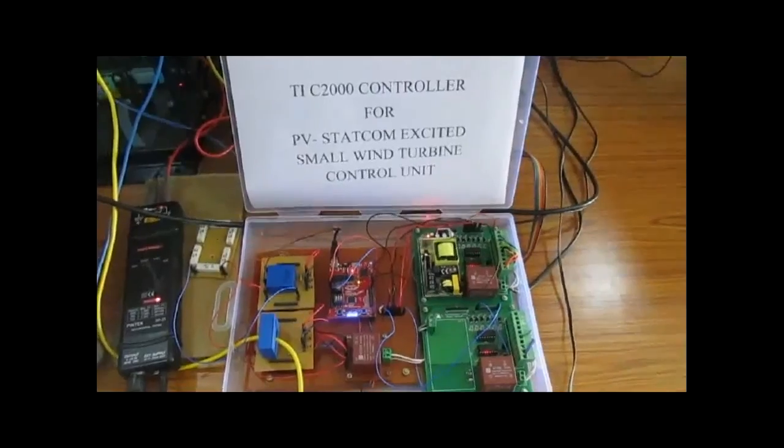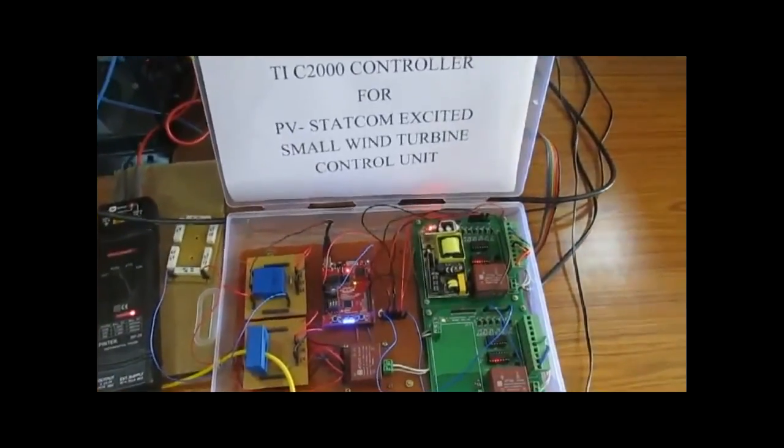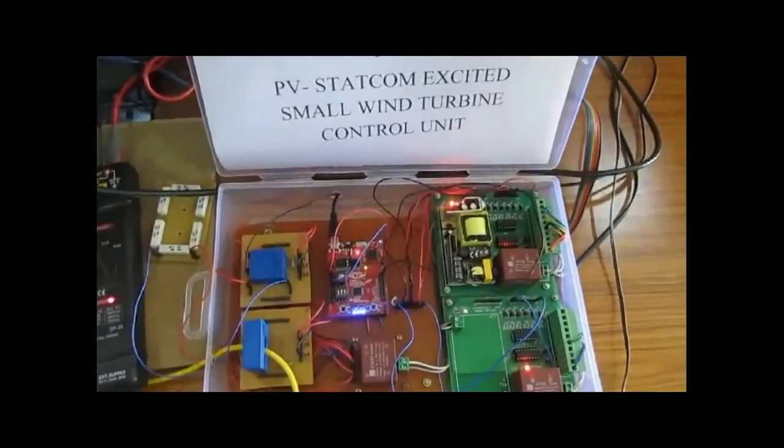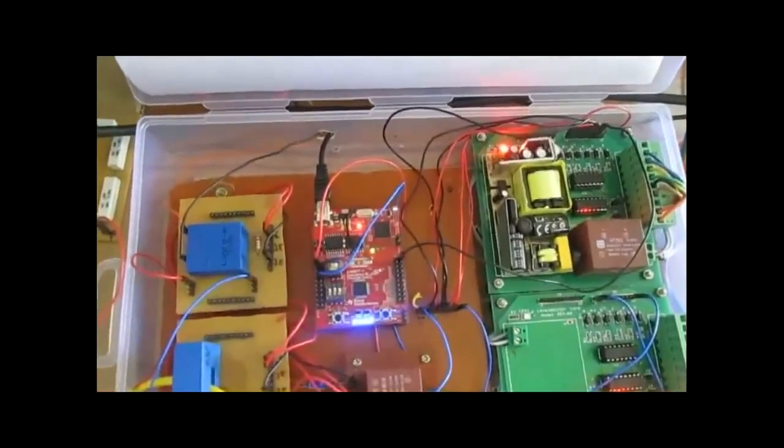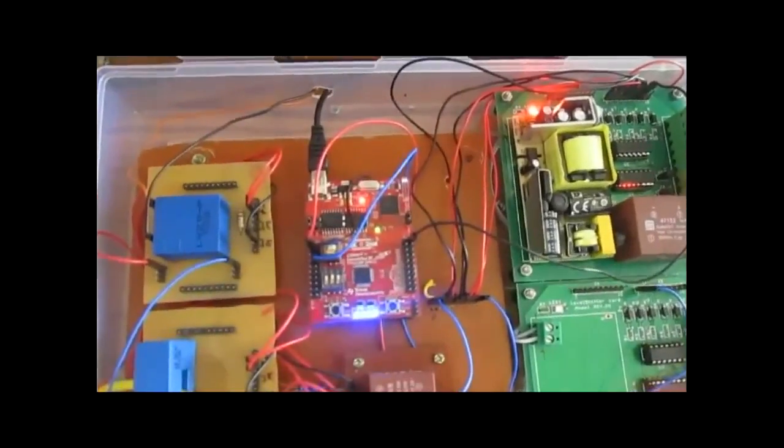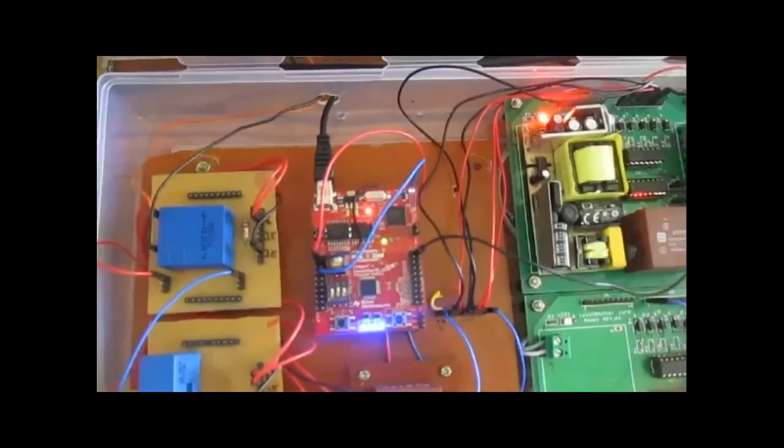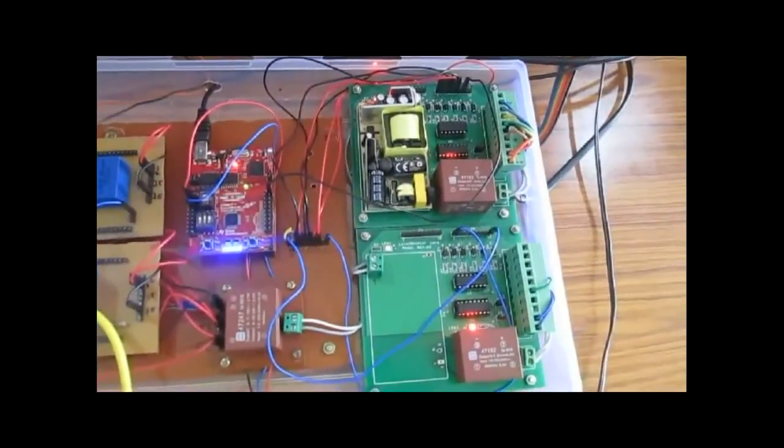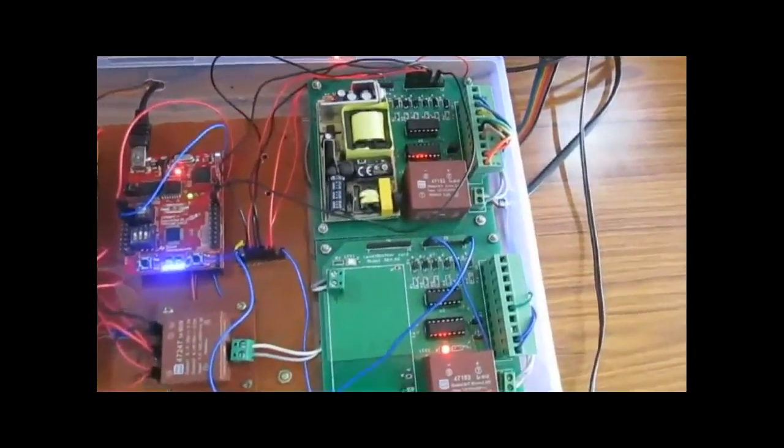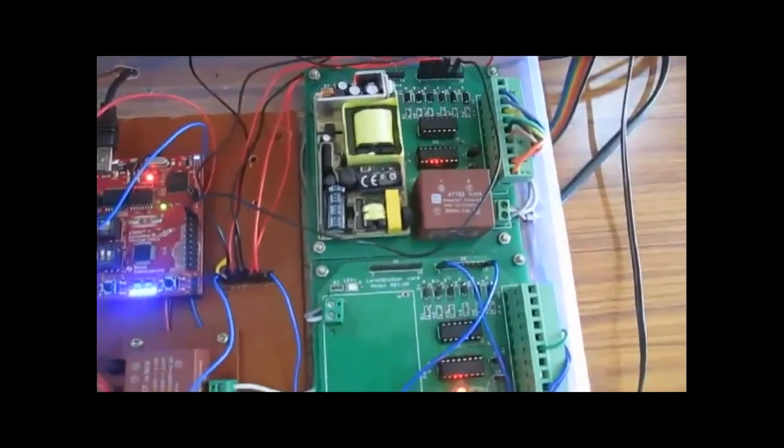You are watching the C2000 launch pad which is the heart of our control unit. The red color PCB. And to the right side there is a level shifter which is used to interface the 3.3V PWM outputs to the driver inputs of the IGBTs of inverter and boost converter.